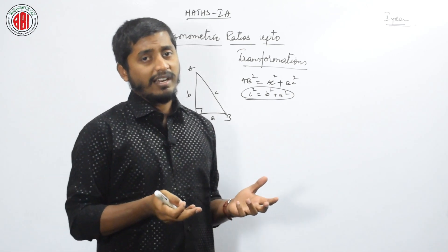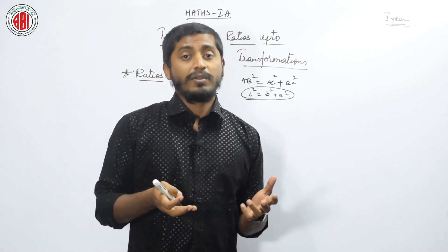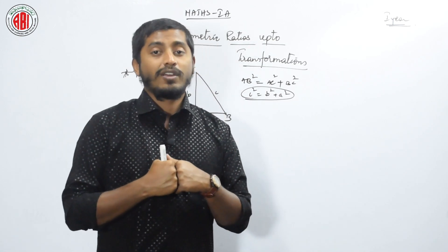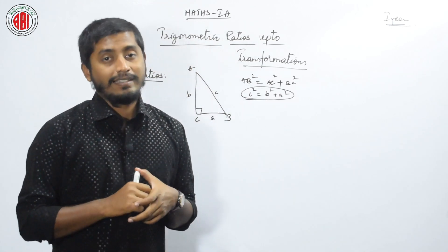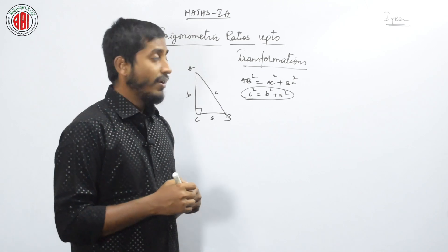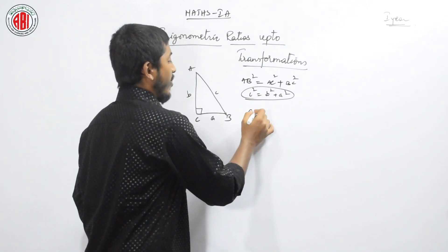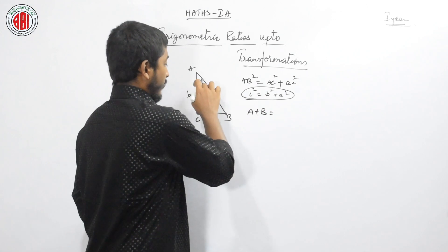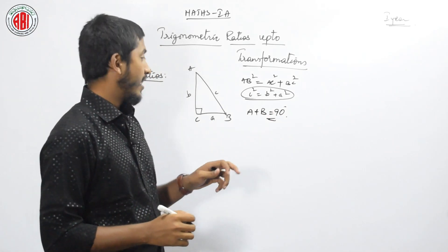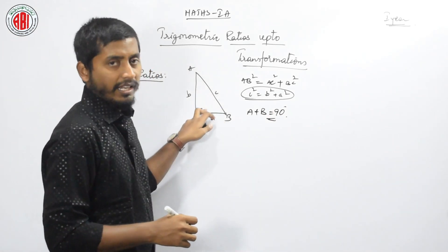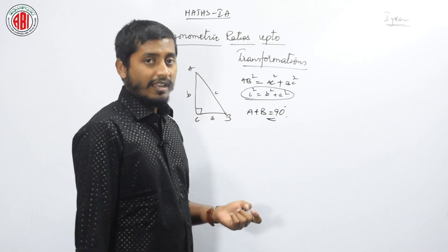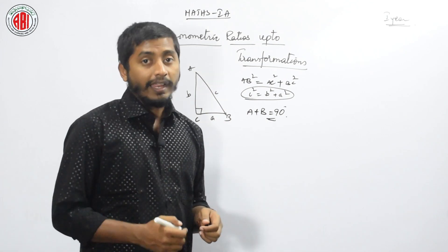The second most important relation, which is general to all triangles, is the relationship between the three angles: the sum of angles in a triangle is always 180 degrees. Since one angle is already 90, the sum of the other two angles is always 90 degrees — because 180 minus 90 leaves 90. So A + B = 90.